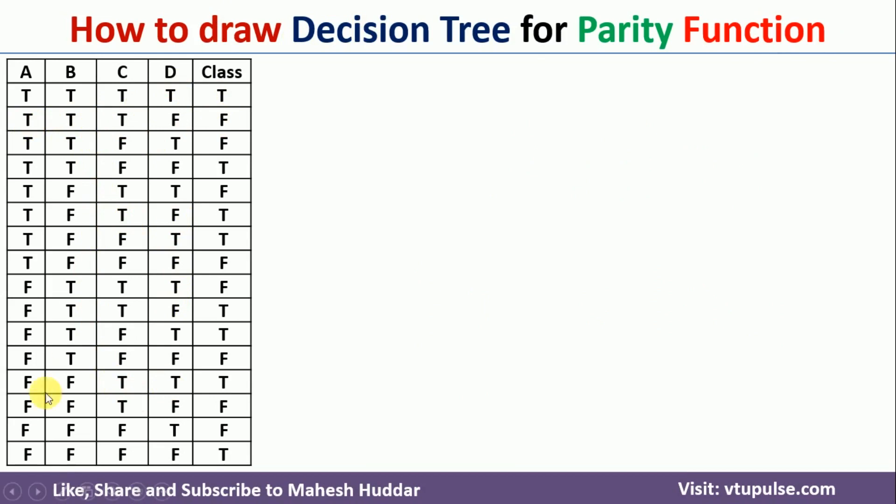Now, if you want to understand how to draw the decision tree for this particular parity function, we need to start evaluating this function from left to right. So leftmost operand is A here, so we will start with A as the root node in this case.